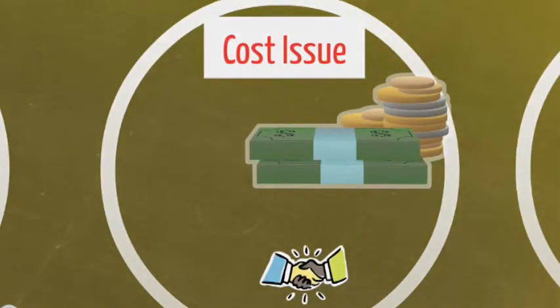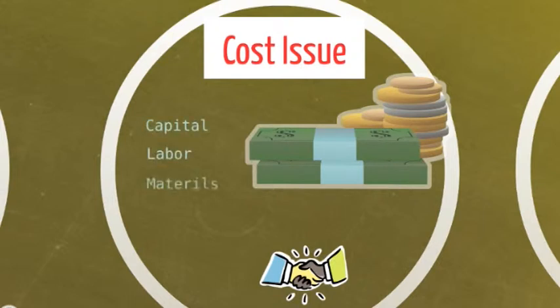Okay, secondly, the cost issue. The costs that the wet corn milling firm faces include capital, labor, materials, fuel, and electricity. How to balance this cost to achieve a quality, quantity, win-win situation is significant.